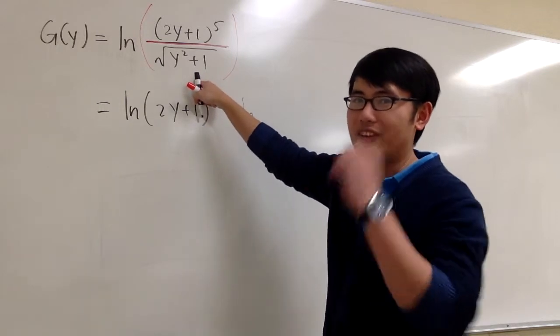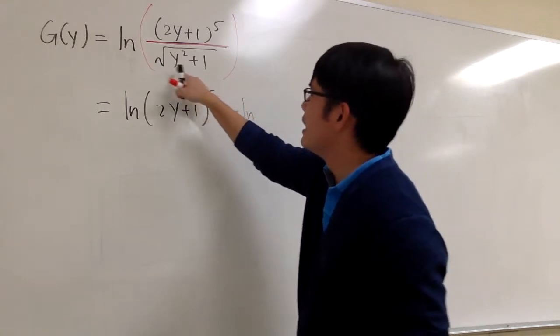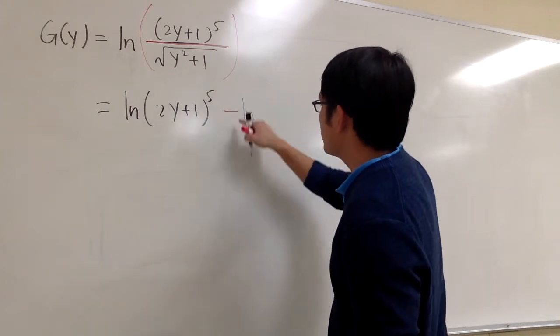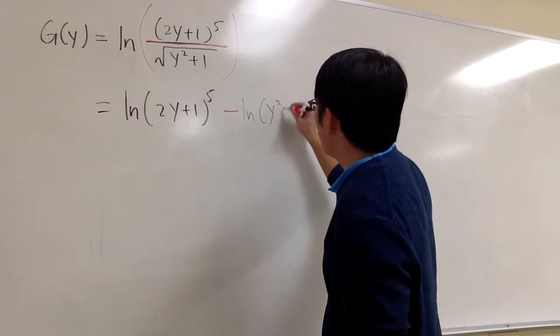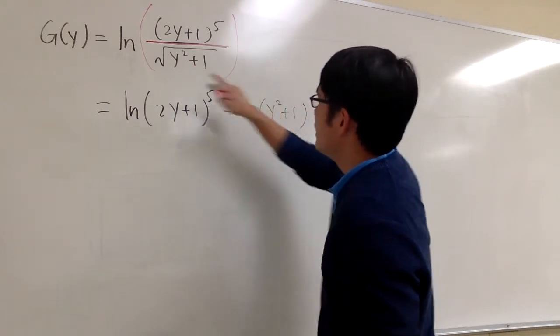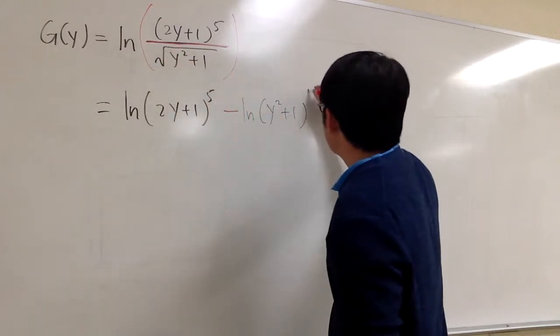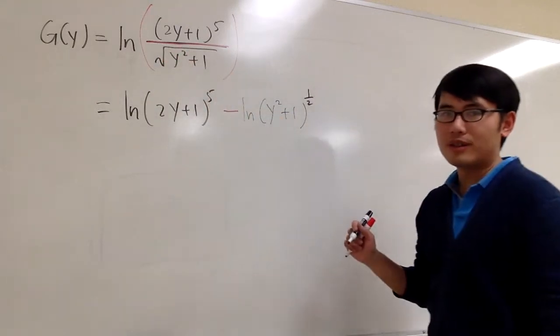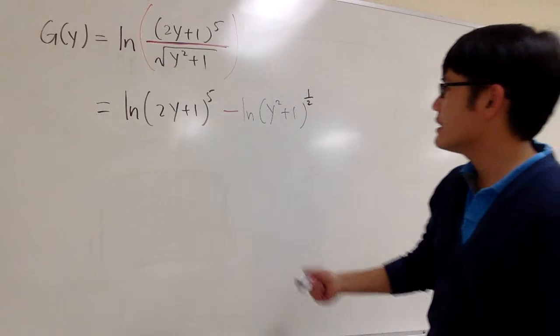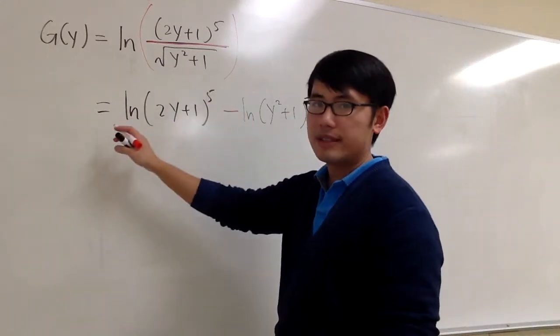Let's look at square roots as the one-half power in calculus. Let me put this as the natural log of y squared plus 1. Instead of the square root, I can write that as the one-half power. And when I do that, as we see, the power can go to the front.